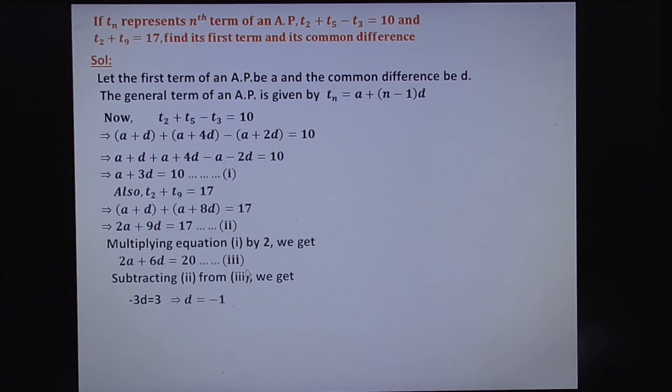If you subtract equation 2 minus 3, 2A and 2A gets cancelled. So 9D minus 6D equals 3D, 17 minus 20 equals minus 3. 3 and 3 gets cancelled. Therefore, you get D equals minus 1.